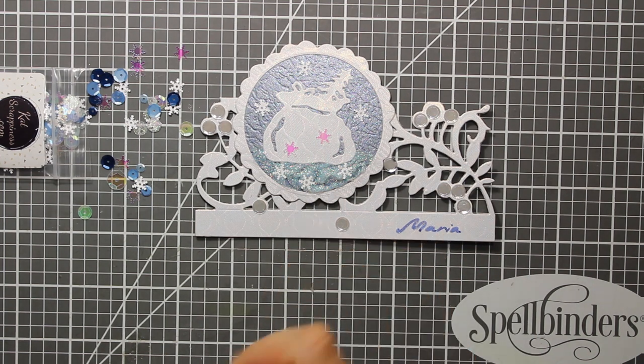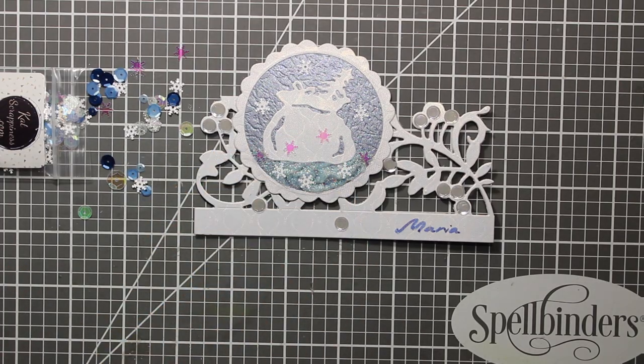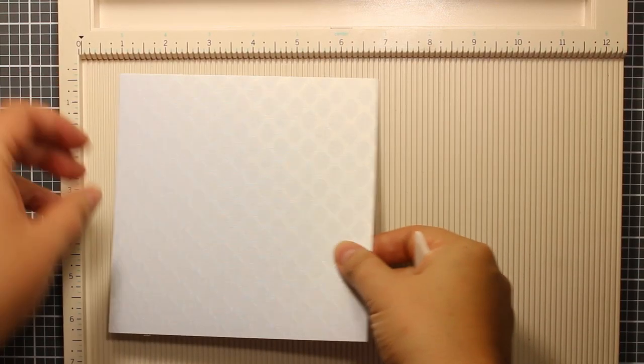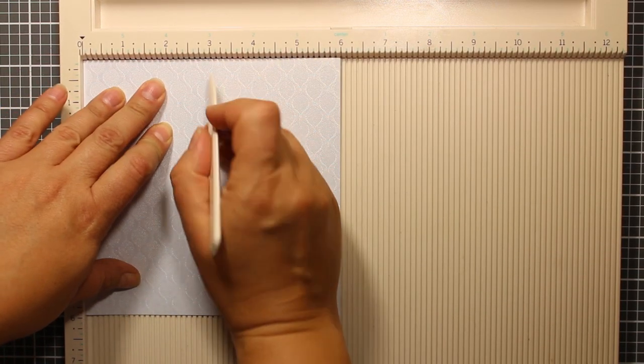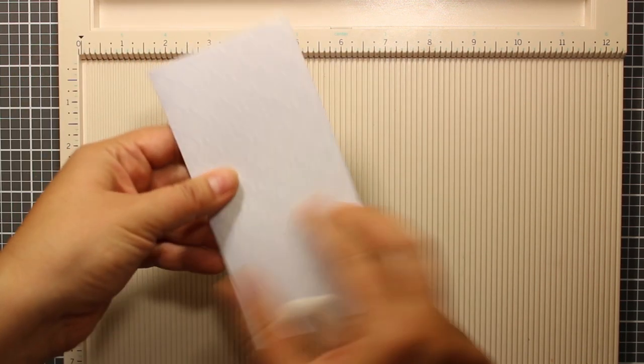That finishes the card and now I'm going to show you really quickly how I made a matching chocolate bar holder. It's really simple. I'm folding a 6x6 sheet of paper in half just like I did for the card.